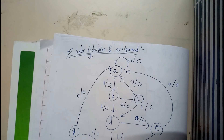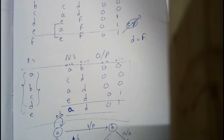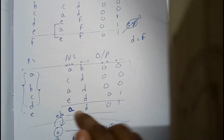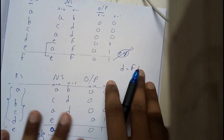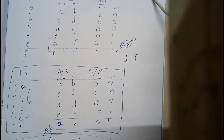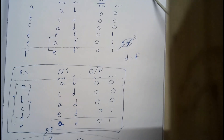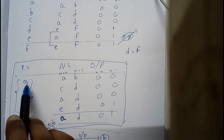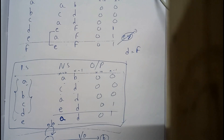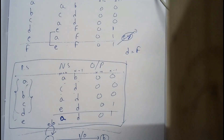Hello guys, in this tutorial let's cover state assignment, which I missed in the previous tutorial. This is a really small topic. In state reduction we ended up with a final state table containing variables A, B, C, D, E. We cannot directly continue further processing with letter labels, so we need to assign binary codes to each state.